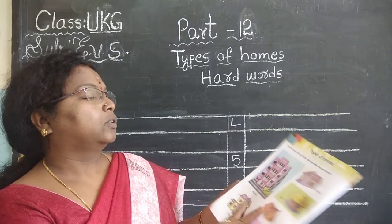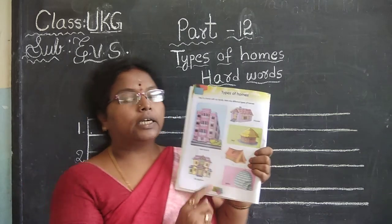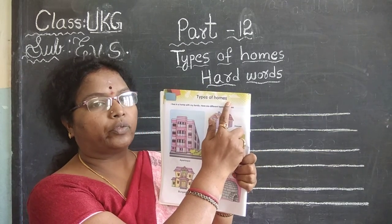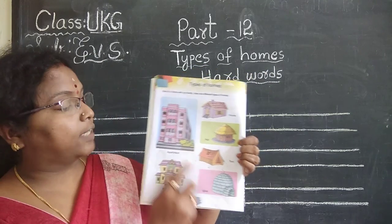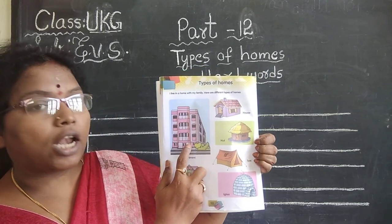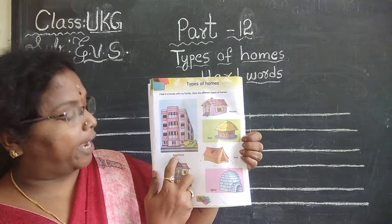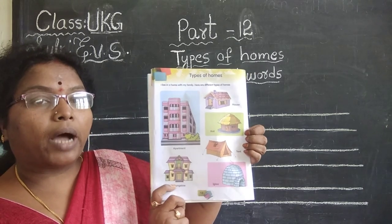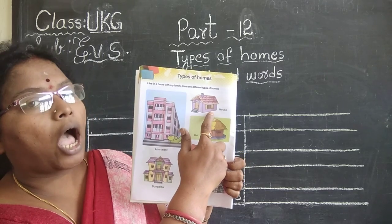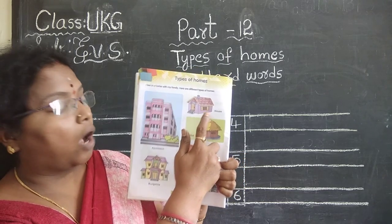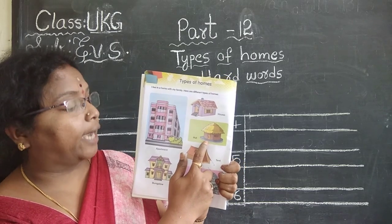Now next lesson. Today we are going to learn a new lesson. What is the topic? Types of homes. See, here all the pictures are there. Different types of homes. What is this? Apartment. What is this? Bungalow. What is this? House. What do you call this? Hut. In villages, huts will be there. Hut. Now, what is this? Tent. This is igloo.